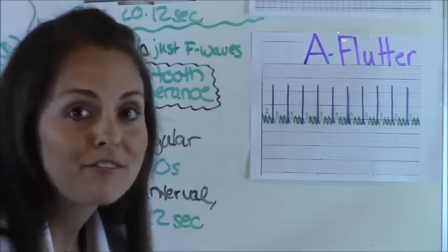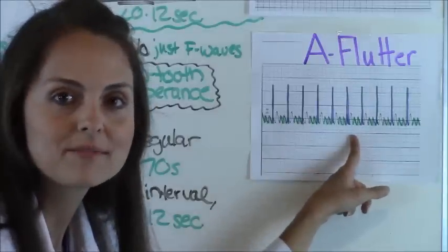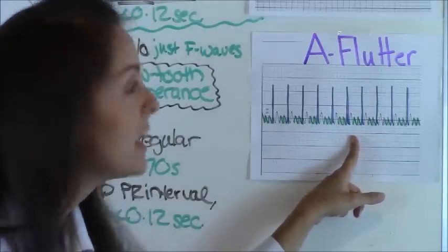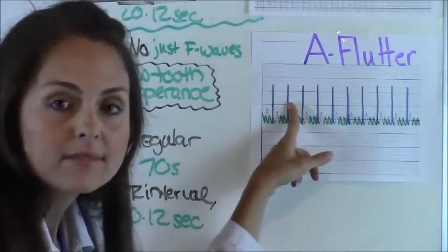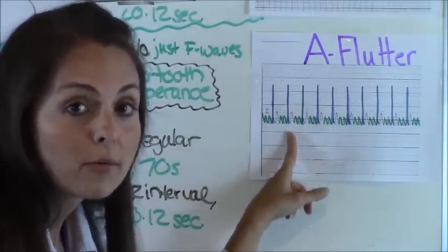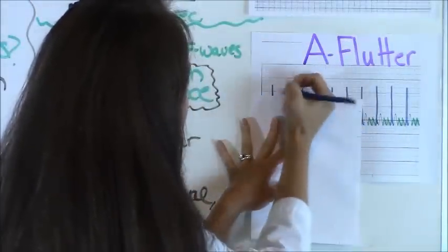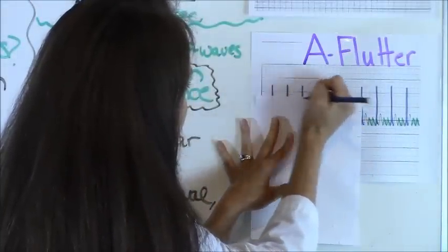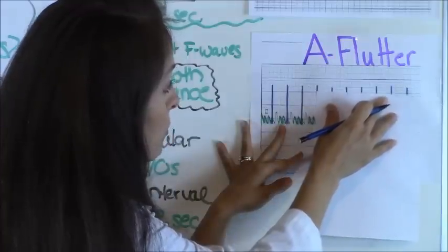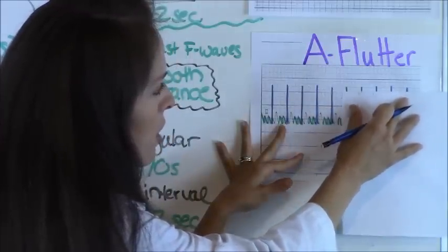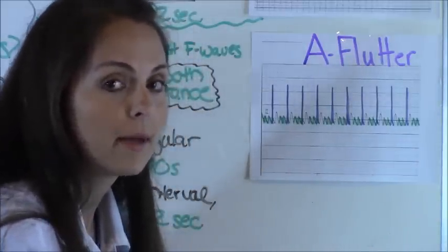Let's go through our five steps for AFlutter. Step one, are there any P waves? No, there are no P waves — only F waves. So we can't count the atrial rate. Step two, we want to look at our R waves. We do have R waves, and are they regular? Measuring them out with calipers or paper, they are definitely regular. Typically in AFlutter your R waves will be regular.